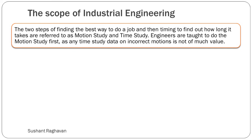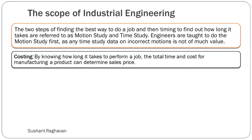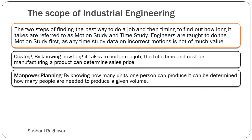The two steps of finding the best way to do a job and then timing to find out how long it takes are referred to as motion study and time study. Engineers are taught to do motion study first, as any time study data on incorrect motion is not of much value. Some uses of Industrial Engineering include costing — by knowing how long it takes to perform a job, the total time and cost for manufacturing a product can determine sales price. Also manpower planning: by knowing how many units one person can produce, it can be determined how many people are needed to produce a given volume.